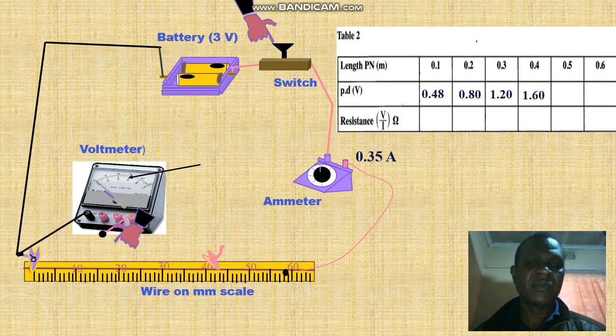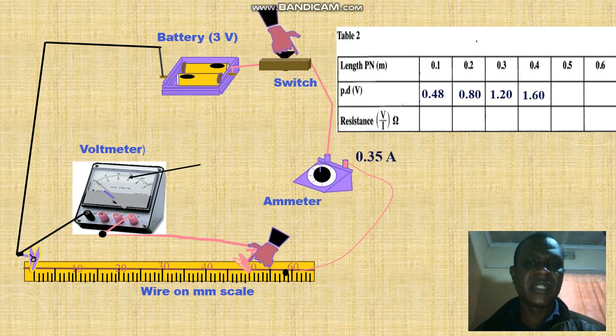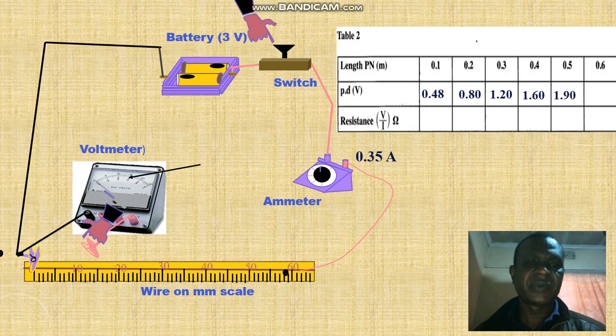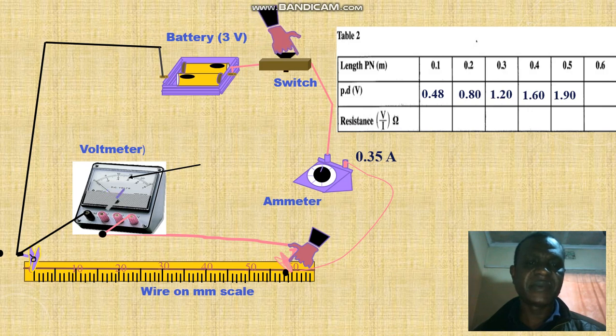We now move it to 5.0, 0.5, close the switch. Voltmeter reading is 1.90, then 6, then voltmeter will be 2.25. Now you're through with that experiment.